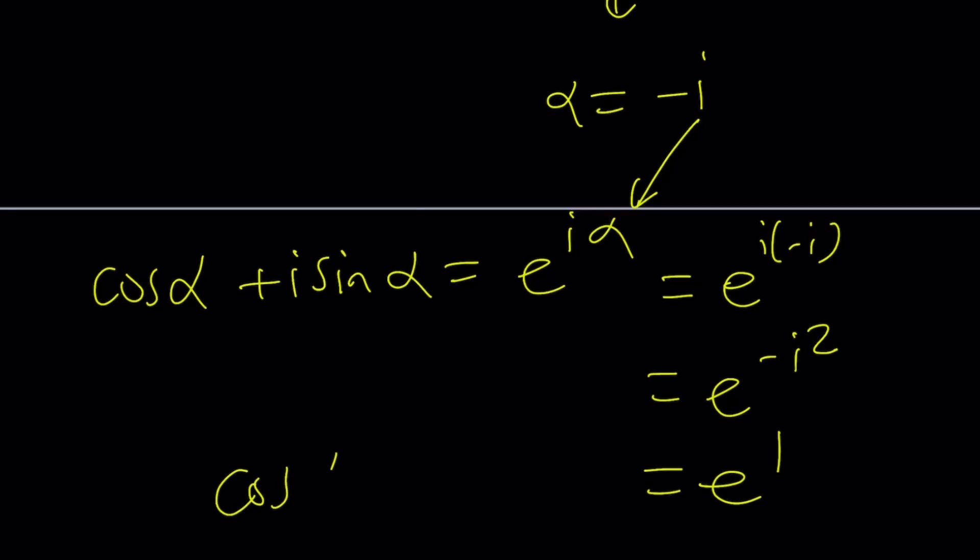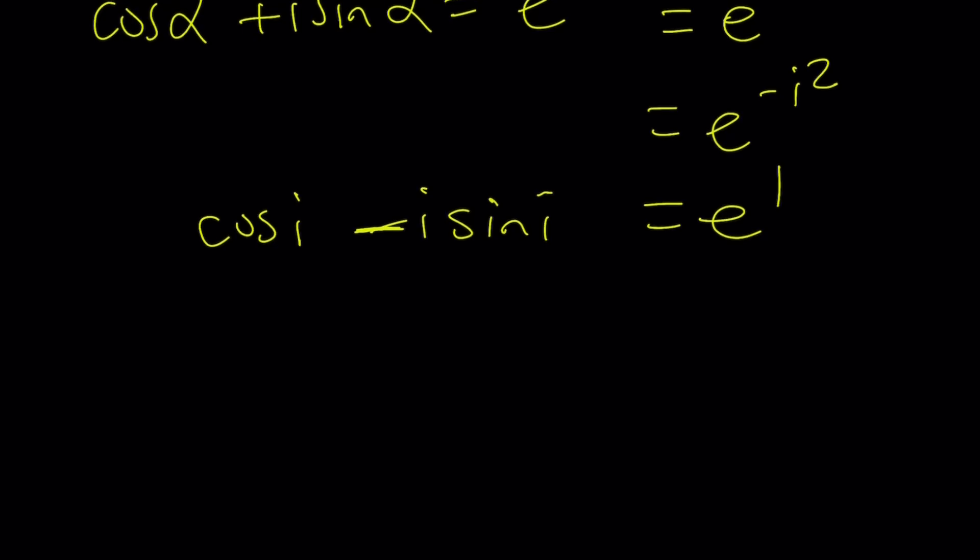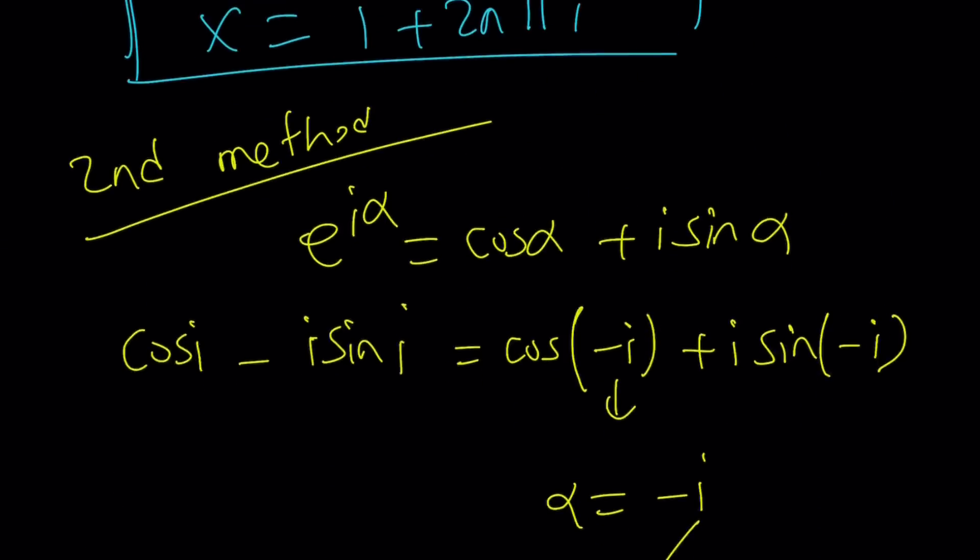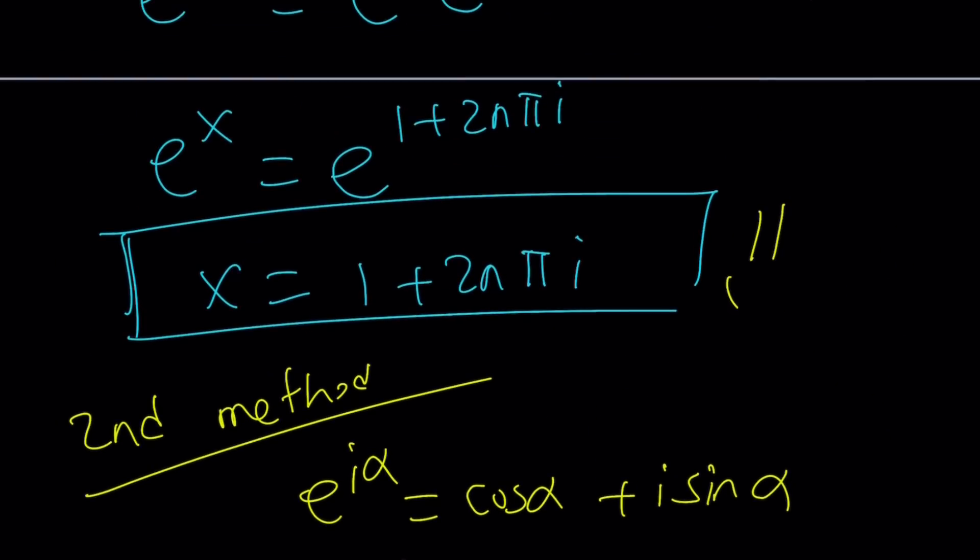So cosine alpha minus i sine i, I'm sorry, I'm kind of rushing through this. Slow down, slow down. Cosine i minus i sine i is equal to e to the power 1, which is e. But this is also equal to e to the x. And from here, we get the same equation and get the exact same solution as before.